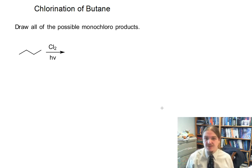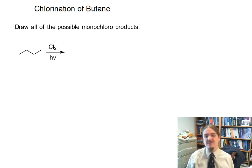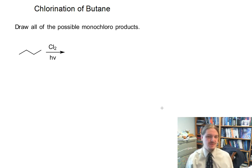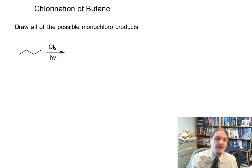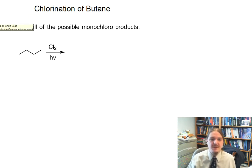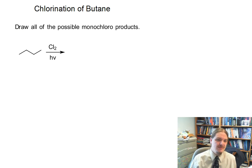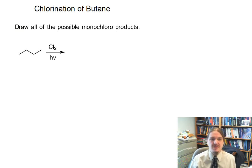Hello. In this video, I'm going to talk about the chlorination of butane, and we're going to practice drawing all of the possible monochloroal products. In the previous video on radical halogenation, we talked about simple compounds that only have one kind of hydrogen on them.